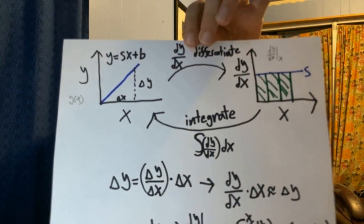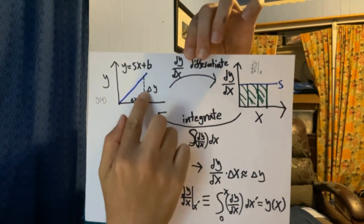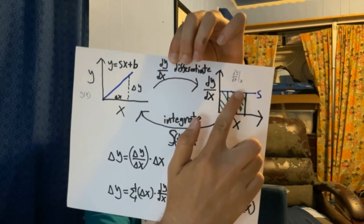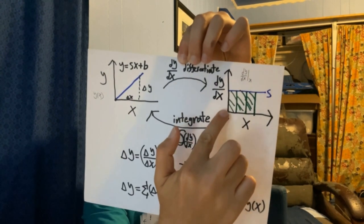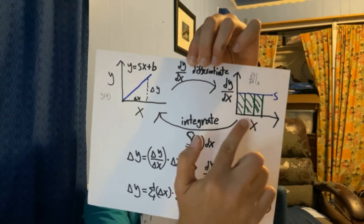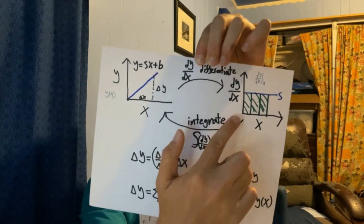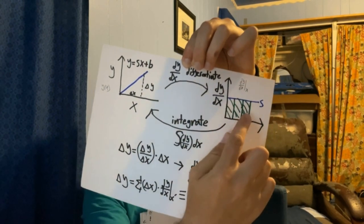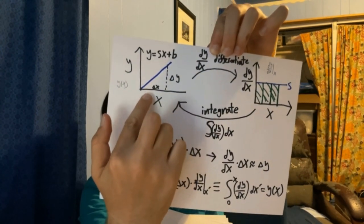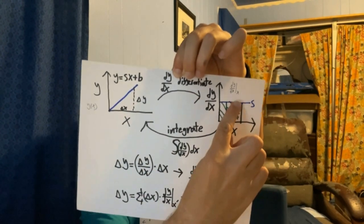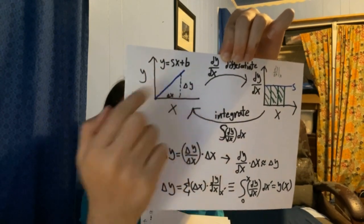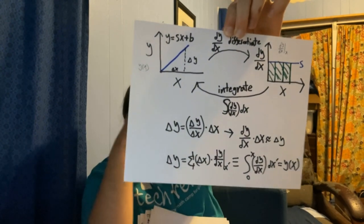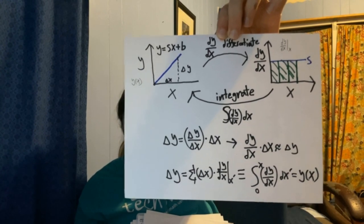There are these two processes going in different directions: differentiation, where we find the slope of a line and get some constant; and integration, where we multiply the height of the line by the distance along the horizontal we're considering and get back an area. That area is proportional to the constant times the parameter you're varying, giving a straight line with slope equal to the height. Differentiation and integration are inverse processes, and all we need is the assumption that we can zoom in on space and time as much as we want.